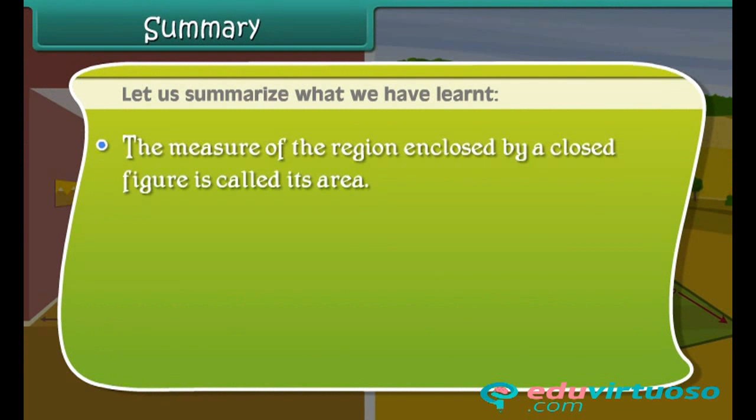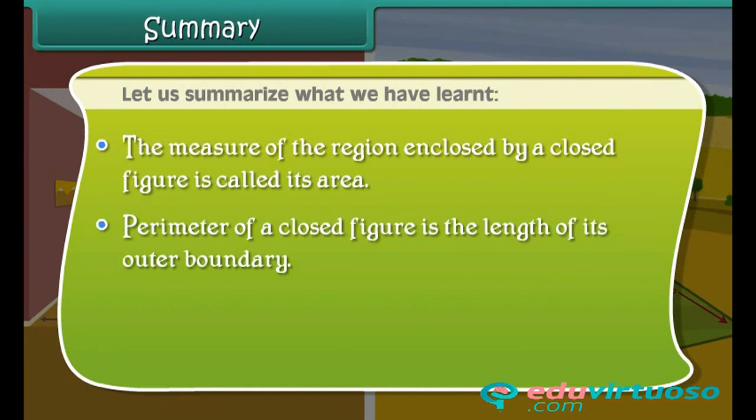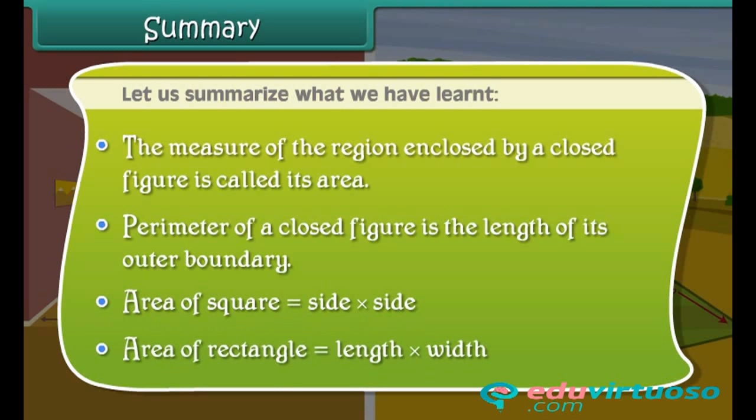The measure of the region enclosed by a closed figure is called its area. Perimeter of a closed figure is the length of its outer boundary. Area of square equals side into side. Area of rectangle equals length into width.